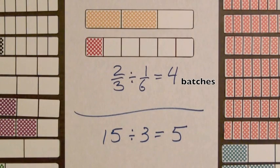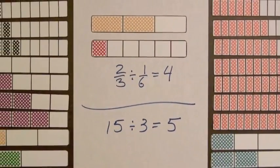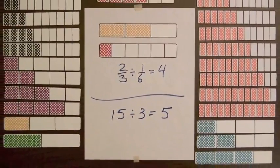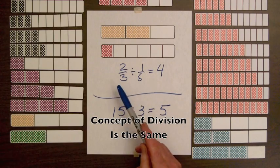In both of these examples, we can ask how many times does one amount fit into another, and in both with whole numbers and fractions, we can answer the question by division. This is one connection from whole numbers to fractions. The concept of division stays the same.